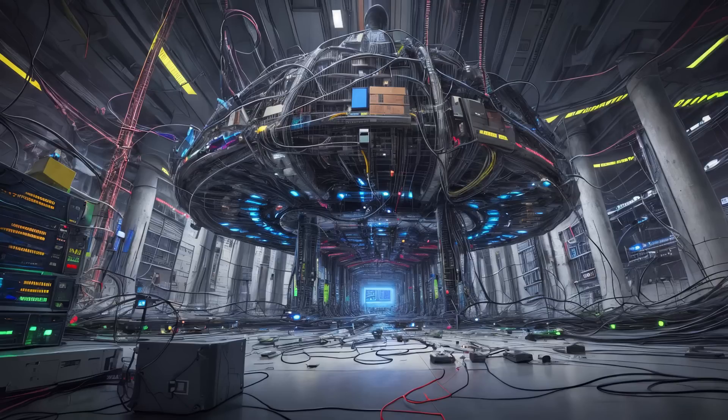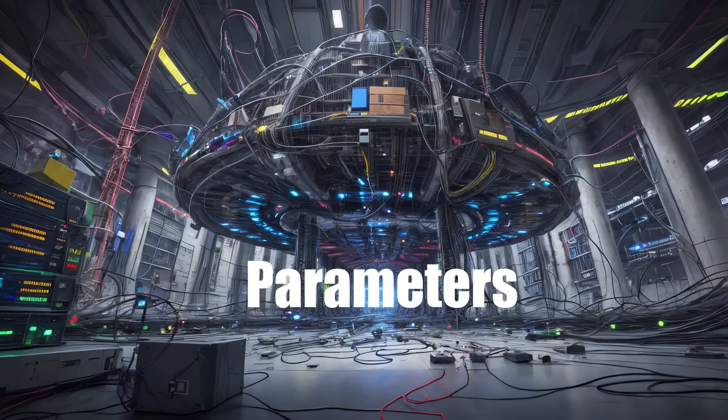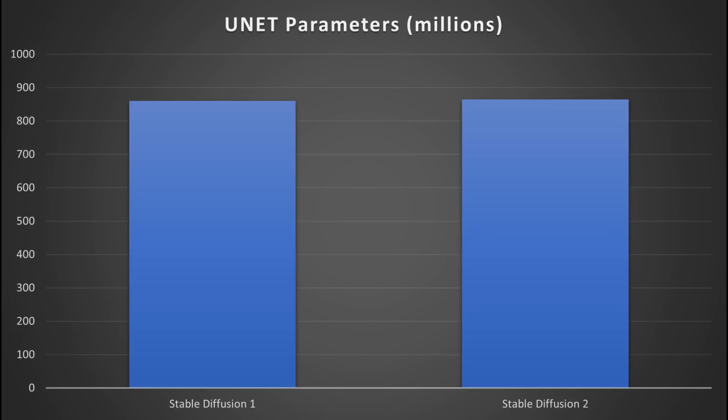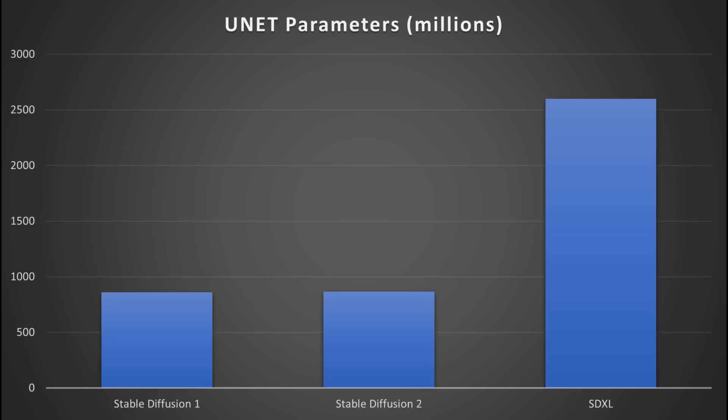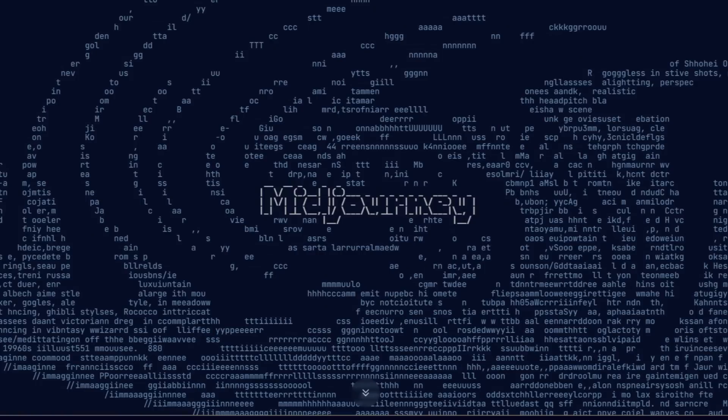The single defining stat for AI models is the number of parameters they have. Stable Diffusion 1.5 has 860 million parameters, and Stable Diffusion 2 has only slightly more at 865 million. In comparison, SDXL has 2.6 billion parameters, which is more than three times as many. This is slightly less than DALL-E 2 with 3.5 billion parameters, and Imagen with 4.6 billion parameters. Unfortunately, I couldn't find any figures on Midjourney to see how it stacks up.